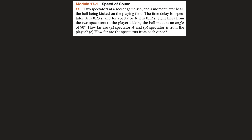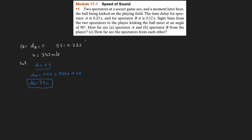To find d_a: the time delta t is equal to 0.23 seconds, and the velocity of sound in air is constant at 343 meters per second. Using the distance formula d = v × t, d_a equals 343 multiplied by 0.23, which gives approximately 79 meters. This is the distance between the player and spectator A.